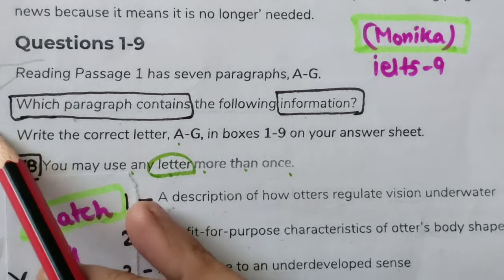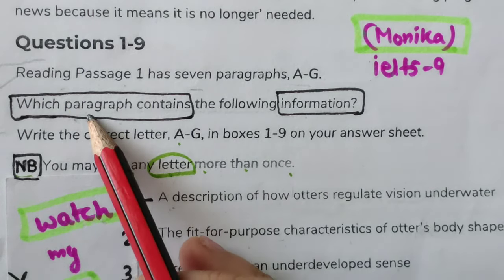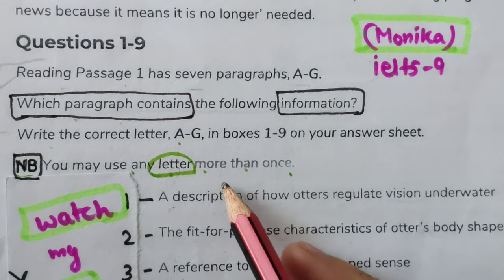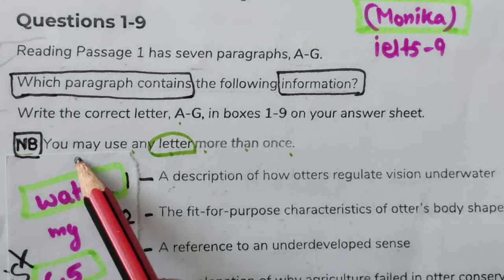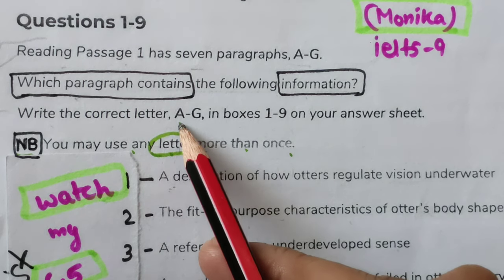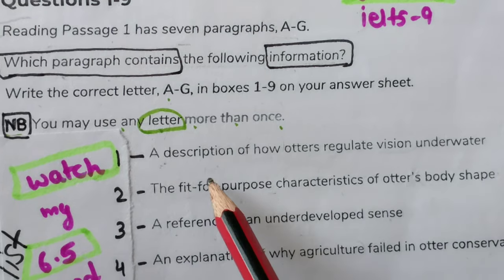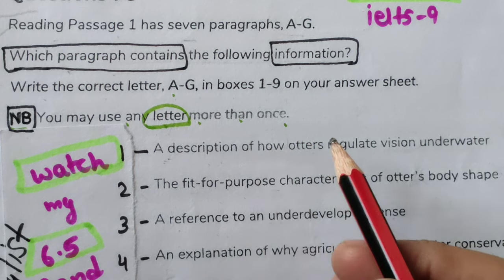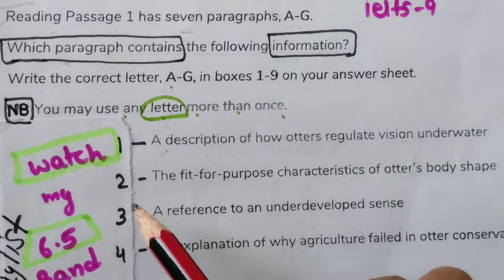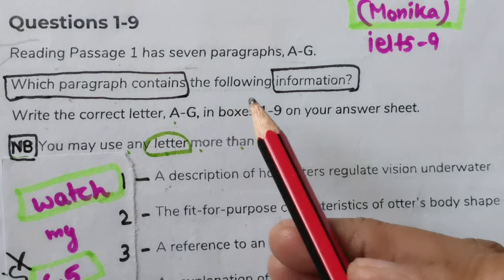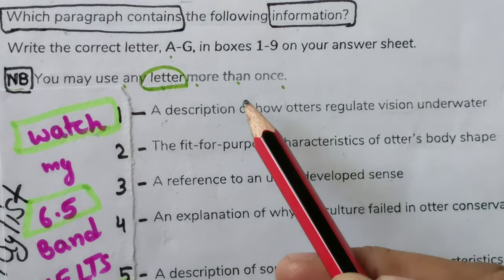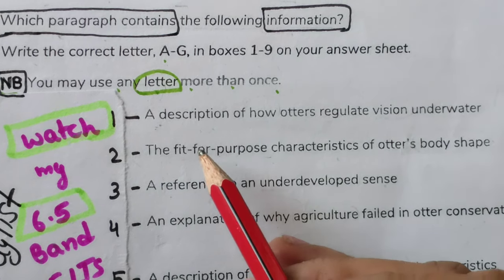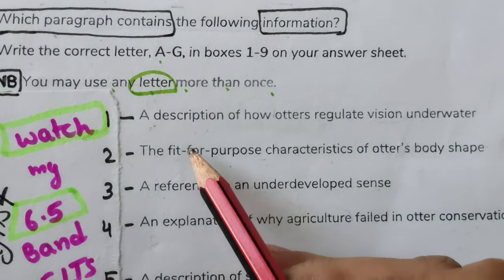The instructions say reading passage 1 has 7 paragraphs A to G, and we have to find the information from the paragraph and write the correct letter A to G in boxes 1 to 9 on your answer sheet — so there are 9 questions. One more thing: they have given 'you may use any letter more than once.' This means if two questions' information can be found in one paragraph, say B, we write B for both. Not every paragraph needs to be an answer, unlike match-the-headings.